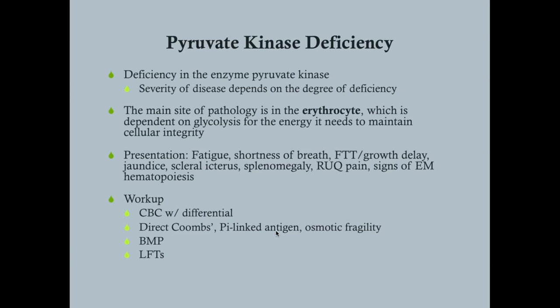G6PD deficiency is the most common cause of enzyme-deficient hemolytic anemia and works through a different mechanism — inability to handle oxidative stress. With pyruvate kinase deficiency, symptoms are constant because cells always need ATP. In contrast, G6PD patients can avoid triggers of oxidative stress, so symptoms are episodic, making pyruvate kinase deficiency potentially more severe.